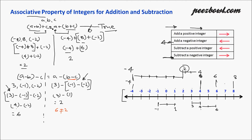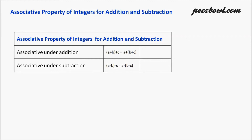So we can say that the associative property is not true for subtraction — this is false. To summarize: associative property under addition is true, as we proved using the example of minus four, eight, and minus two. Associative property under subtraction is false, as shown by the example of three, minus one, and minus two.